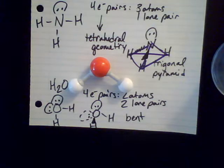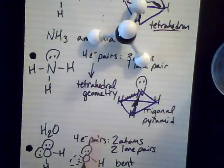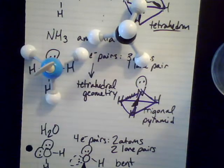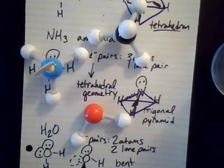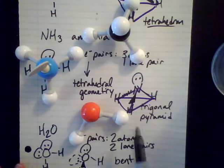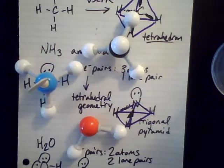With two atoms and two lone pairs, we get a structure that is technically called a bent molecule. So within four electron pairs I have three choices: a tetrahedron where all four are atoms; a trigonal pyramid with one lone pair; and a bent molecule that is just two legs of that same pyramid. All of them have the exact same tetrahedral geometry — it's just their overall shape that differs depending on how many of those four electron pairs are atoms. That's tetrahedral geometry.